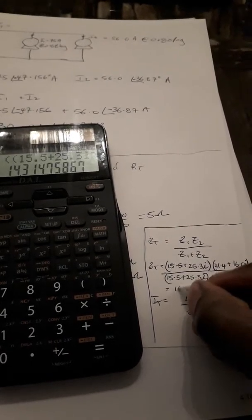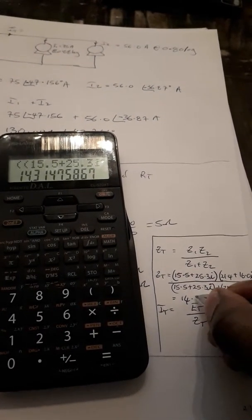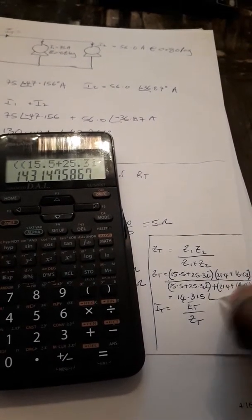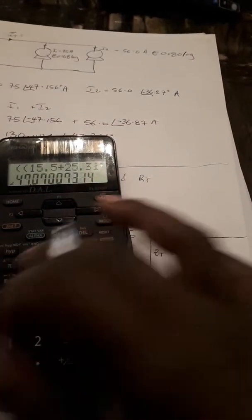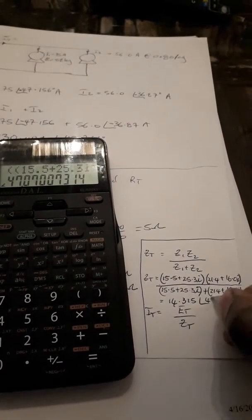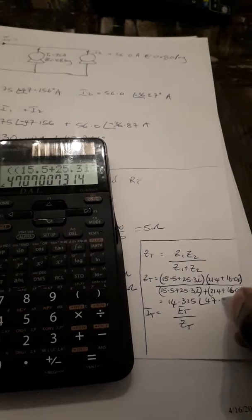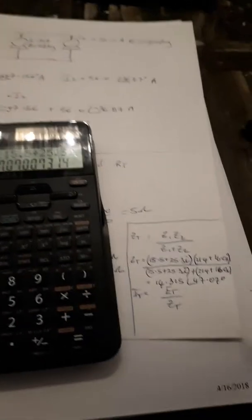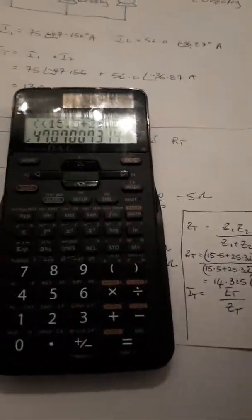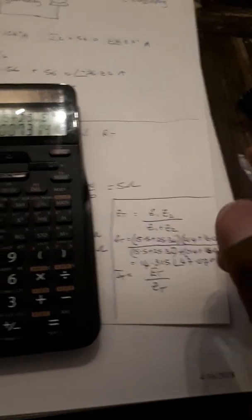Total impedance of that circuit is going to be 14.315 with an angle of 47.07 degrees.